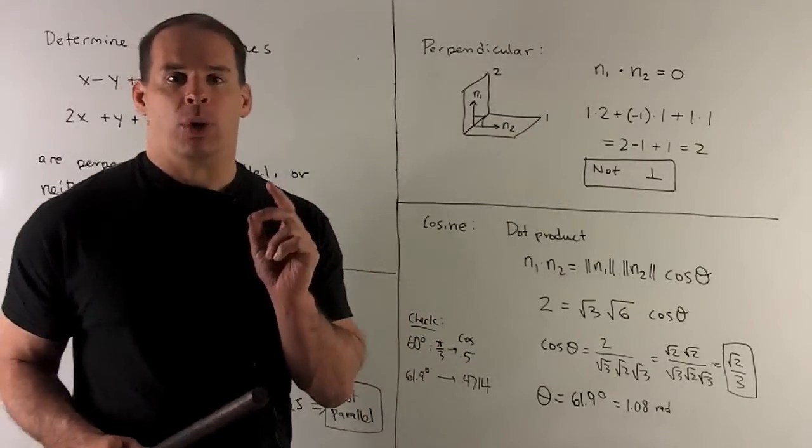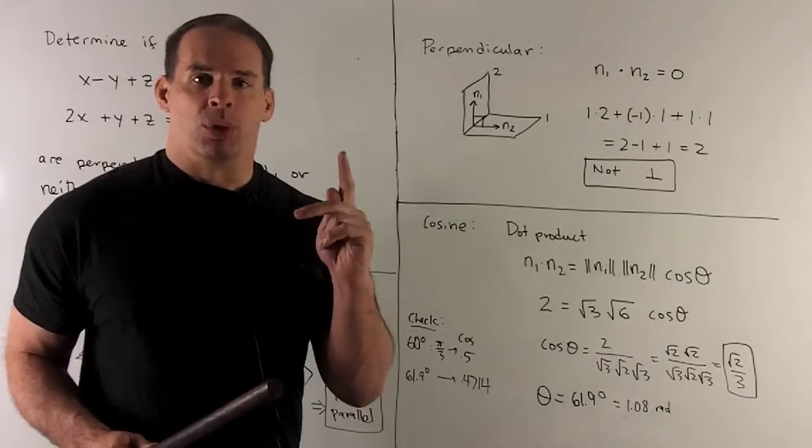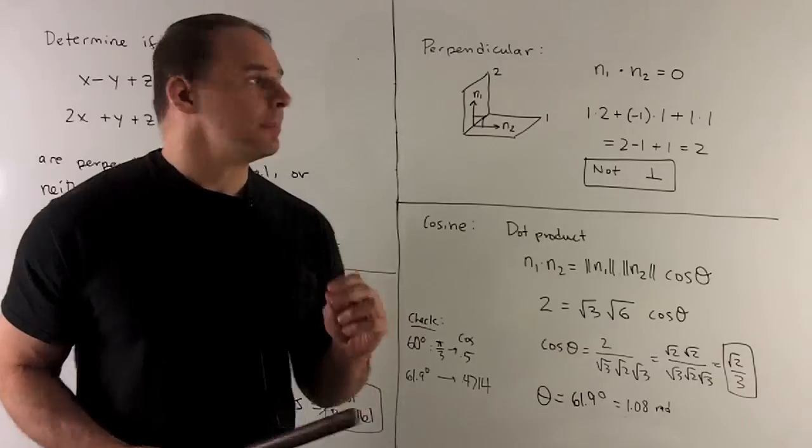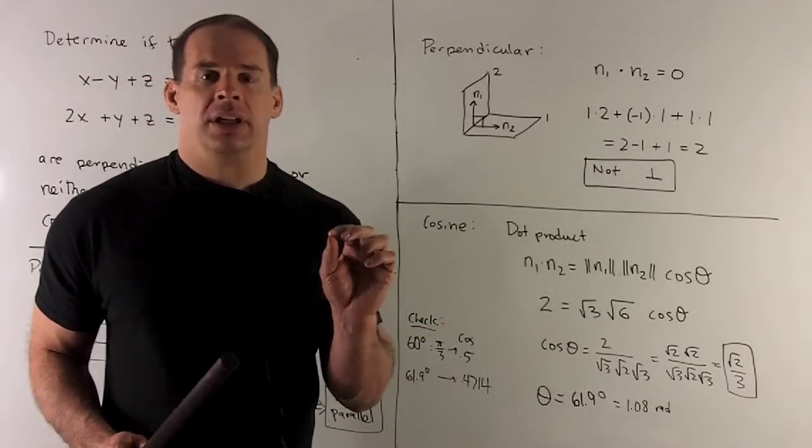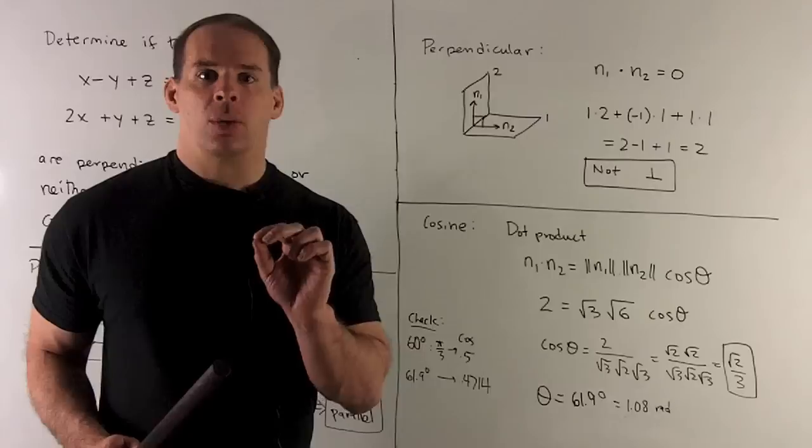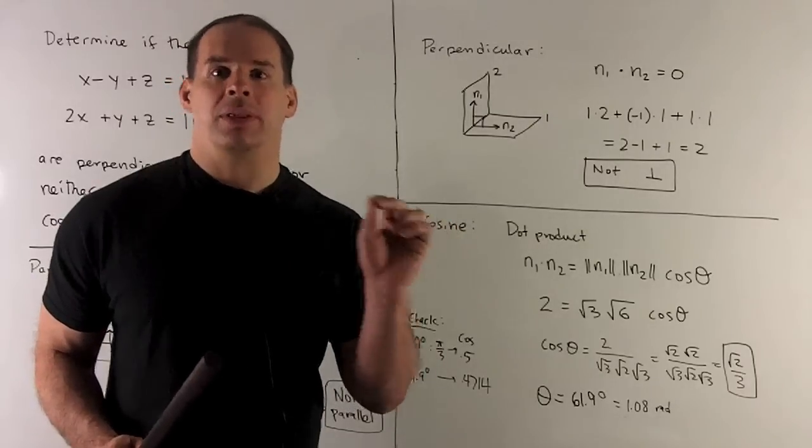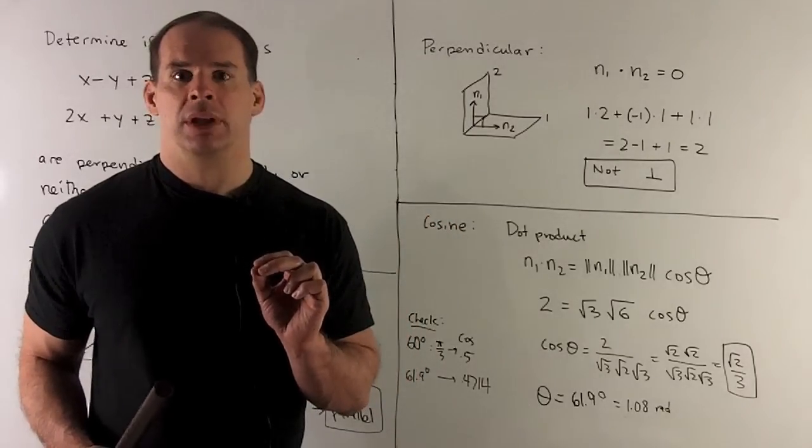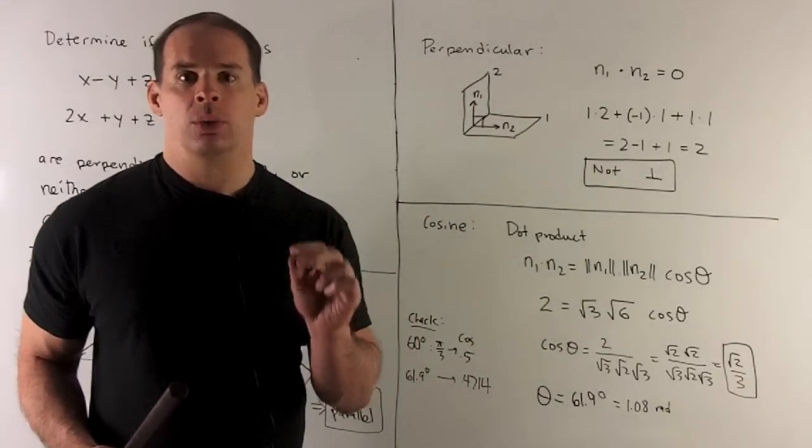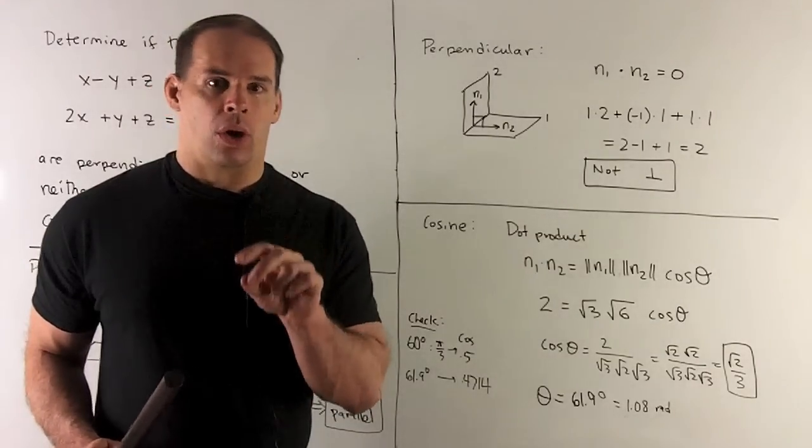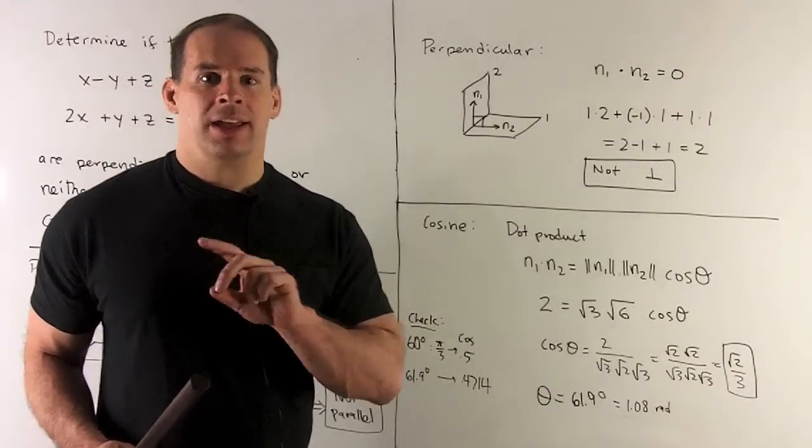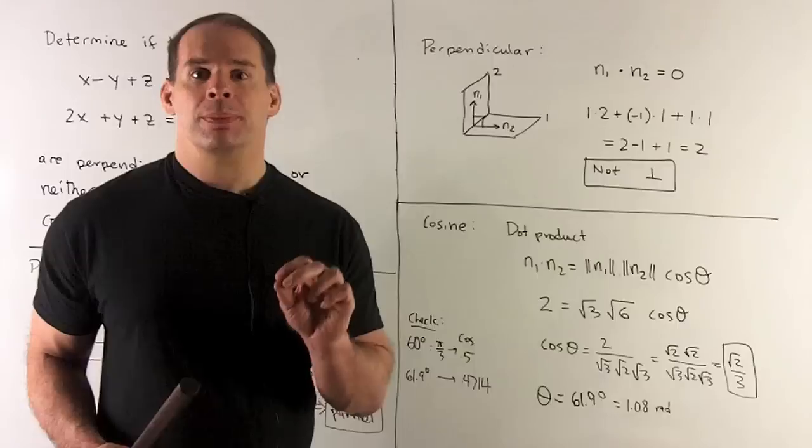Now, key point here is I have two vectors. I want to check if they're at right angles to one another, like these two vectors are. I take their dot product. If they're perpendicular, we're going to get a 0. If we get 0, then they're going to be perpendicular.